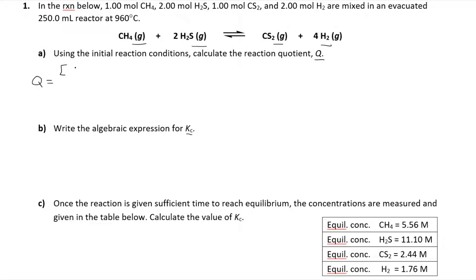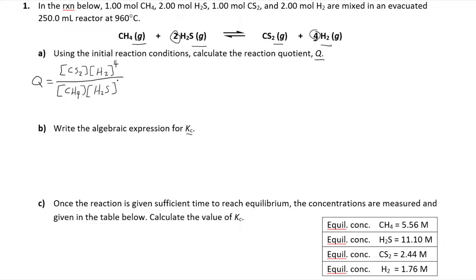Remember that roughly it's products over reactants. We're taking carbon disulfide here — the exponent is one, so we don't have to worry about that — and it's the product of all the products, so we'll take hydrogen gas here. This one does have a coefficient, so please make sure you pay attention to those because it's very easy to make a mistake and not include that stoichiometric coefficient as an exponent.